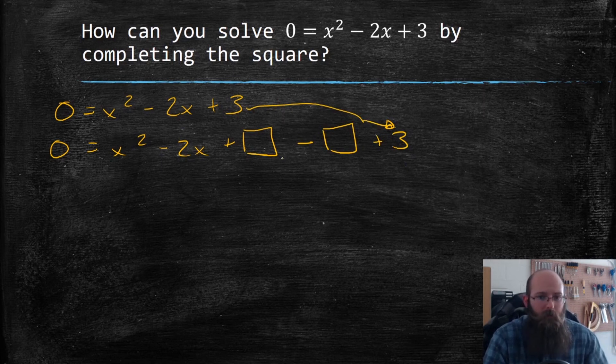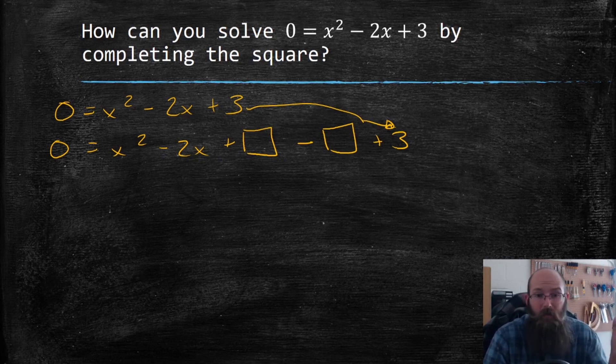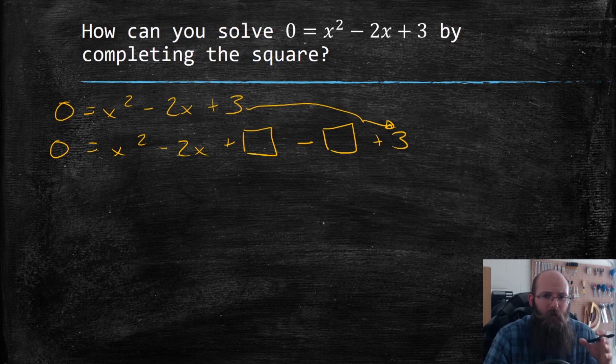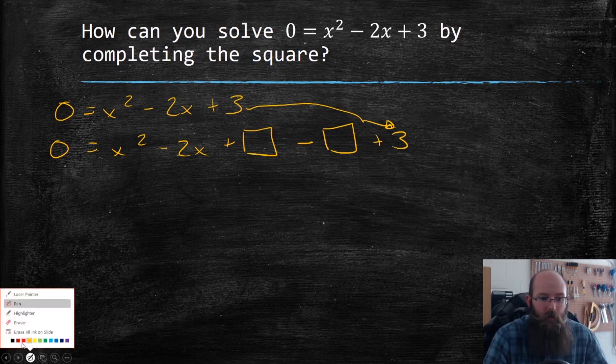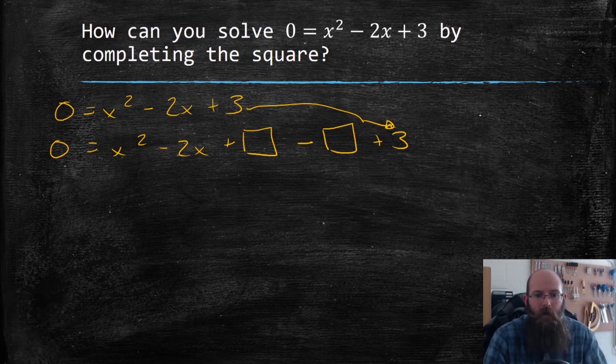And then the x² and negative 2x just came down like normal. Now you'll notice I added the boxes, right? Plus a box and minus box. As long as I put the same thing in both boxes, they cancel and I'm good. So we really need to be careful here and figure out what goes in that box. So I'm going to take my middle term, my B value, and I'm going to divide it by two. So that's a negative two over two, and then I square it.